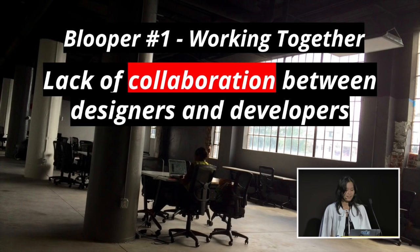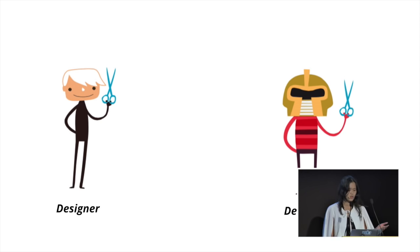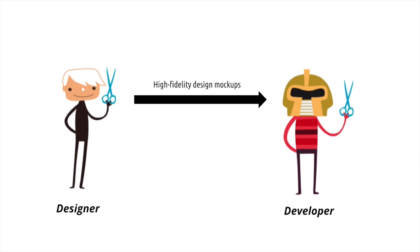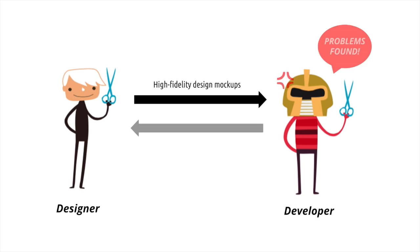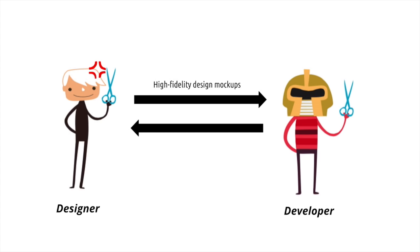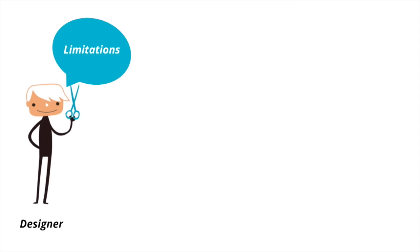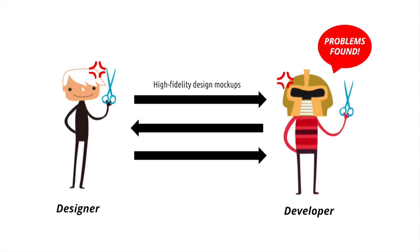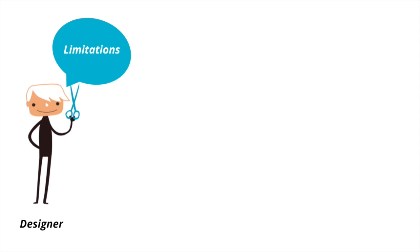What do I mean by a back-and-forth style of communication? A designer passes a high-fidelity design mockup to a developer. During the development stage, developers start finding problems with the design. The design gets passed back to the designer, who gets stressed out thinking of solutions. Once a solution is found, the updated mockup gets passed back to the developer. But it's not the end — problems keep being found and the cycle just keeps repeating itself.